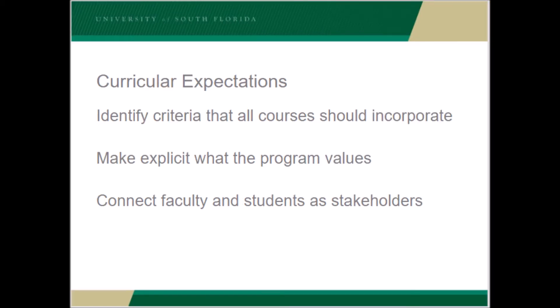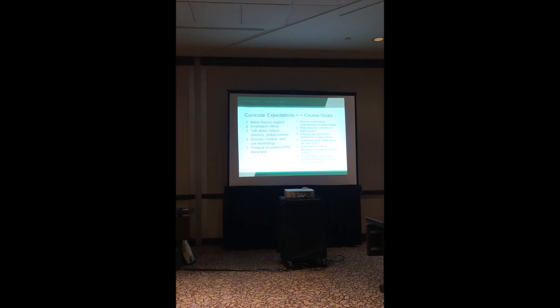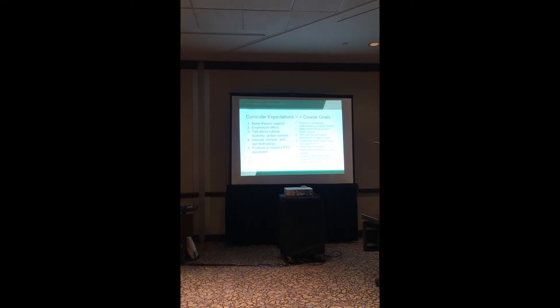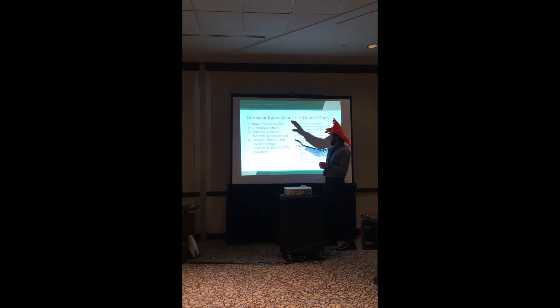We do this with curricular expectations. These are things similar to program goals, but we build them to identify criteria that all courses should incorporate. Rather than just goals or outcomes that students in the program should have, there are things that actually need to be in the syllabi of the courses. These help us make explicit the things that the program actually values, and they connect the faculty and students as stakeholders by giving them a more holistic view of what the program's trying to do and how their courses connect to the overall program.